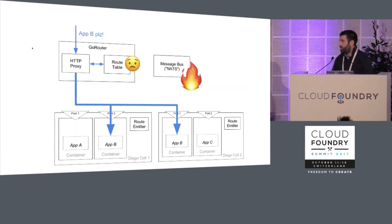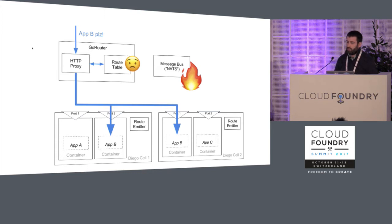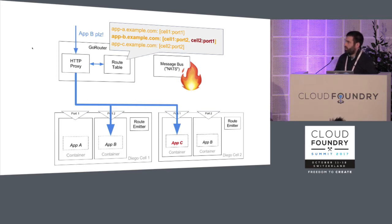This works well, but sometimes the control plane becomes unavailable. If the NATS message bus catches on fire, the router can only hold onto its last known state and keep routing — which works okay until a backend gets rescheduled. An app instance gets restarted and moved, and now the place where app B used to be on cell 2 gets replaced by app C. The route is stale, and the router forwards traffic meant for app B to the wrong backend — a big problem that makes users angry.